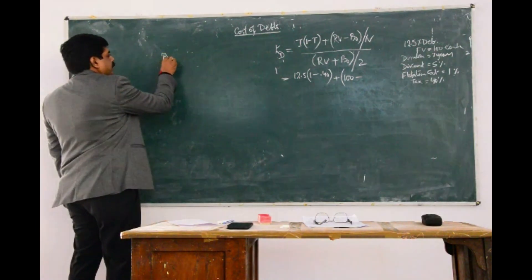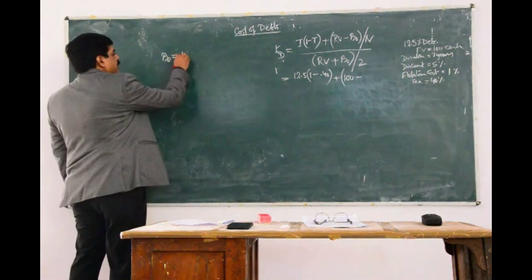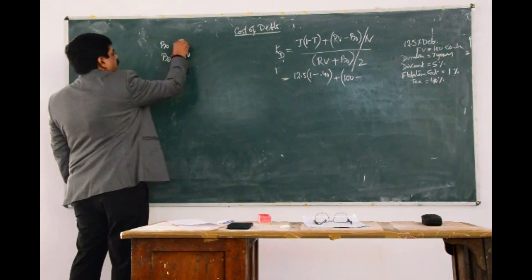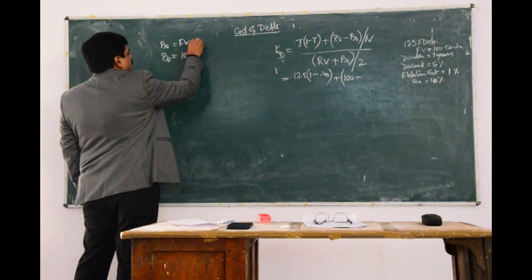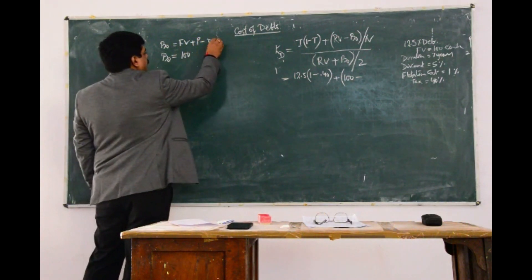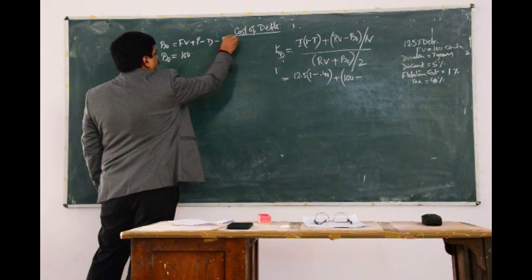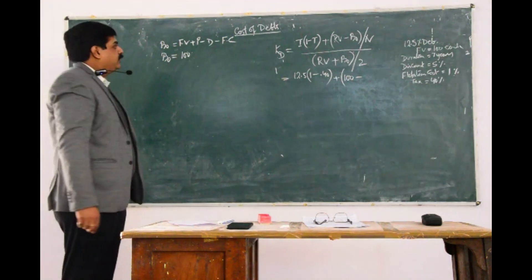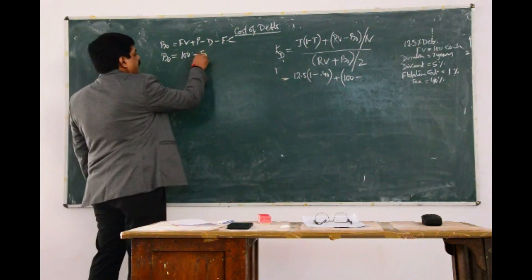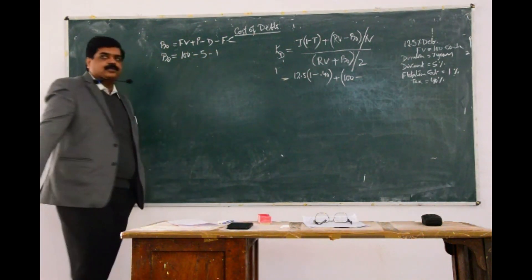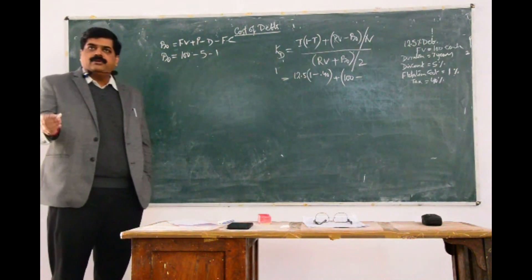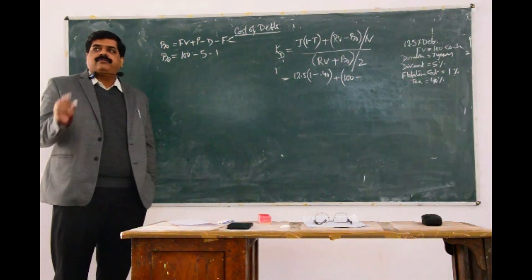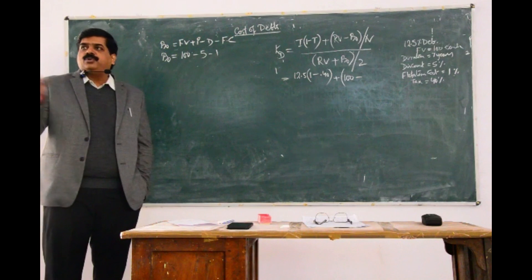If you remember, issue price, or we can calculate here also again, the issue price, that is B0. B0 is equal to face value minus, plus premium, minus discount, minus flotation cost. In this case, we have the face value as 100, we are having a discount of Rs 5, and flotation charge has to be 1.